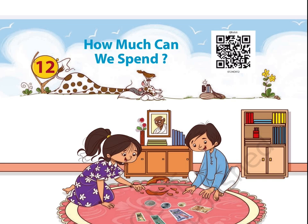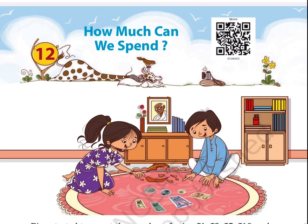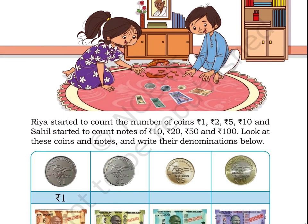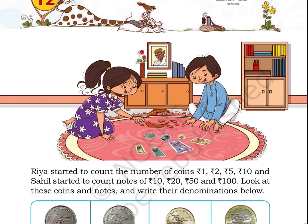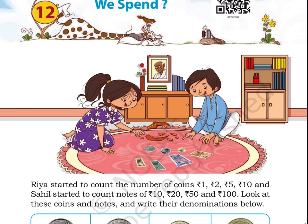Here, there is a picture of two children sitting together. They are counting the number of notes and coins they have. Ria started to count the number of coins of 1 rupee, 2 rupees, 5 rupees, 10 rupees, and Sahil started to count notes of 10 rupees, 20 rupees, 50 rupees, and 100 rupees.